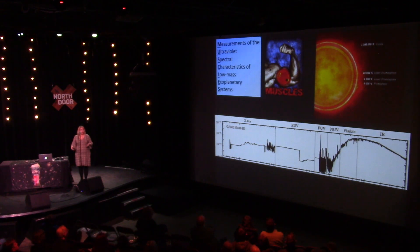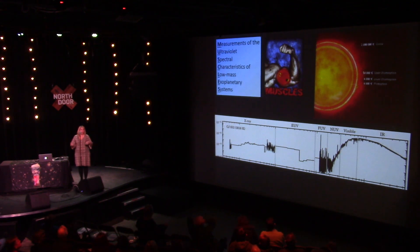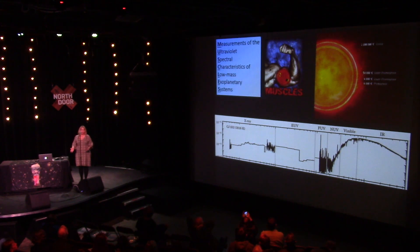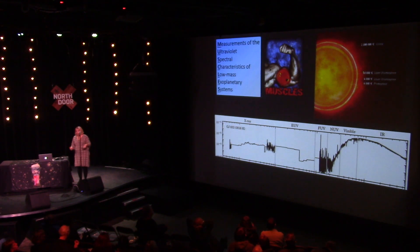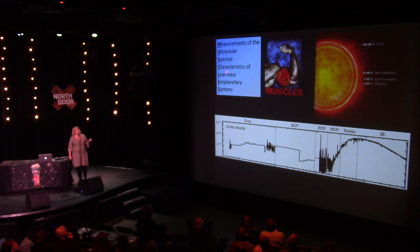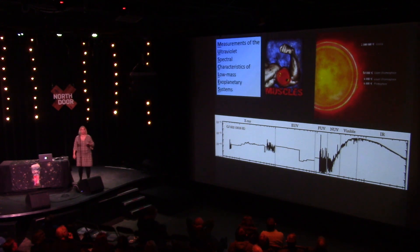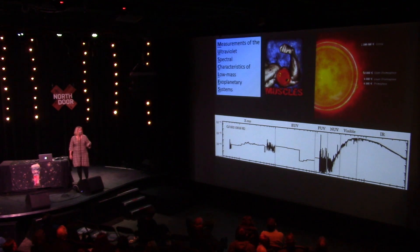We didn't actually know very much about what these red dwarfs were doing before the interest in exoplanets took off. There were some people who studied X-ray and ultraviolet emission from these, mostly because they were interested in flares and magnetic field activity on the star. But what a run-of-the-mill red dwarf is doing and how that affects its planet was something we didn't understand until recently. As a result, our team initiated a survey called MUSCLES — that's where the title of the talk came from: Measurements of the Ultraviolet Spectral Characteristics of Low-mass Exoplanetary Systems. I will take neither credit nor blame for that title; that's from the leader of the original survey, Kevin France. I'm leading the follow-on survey.